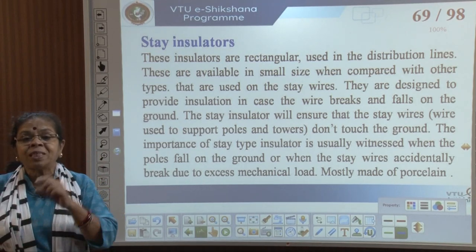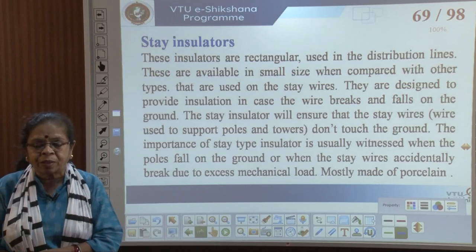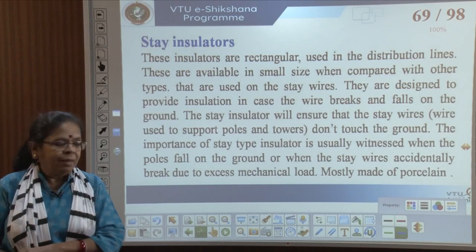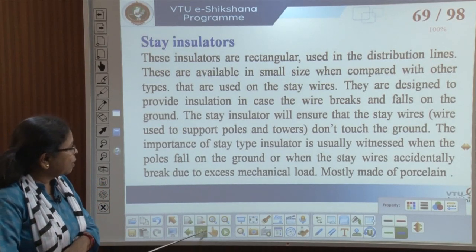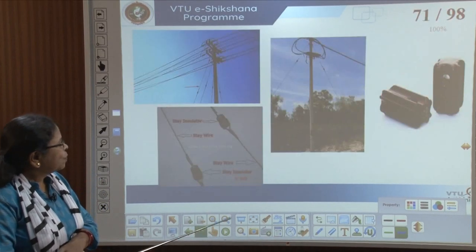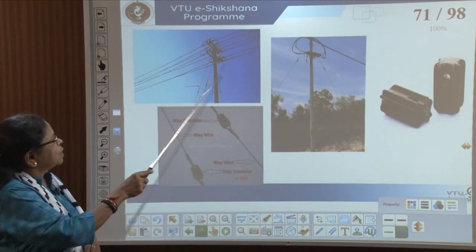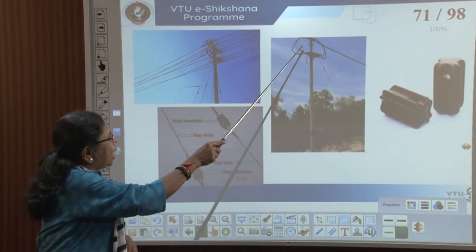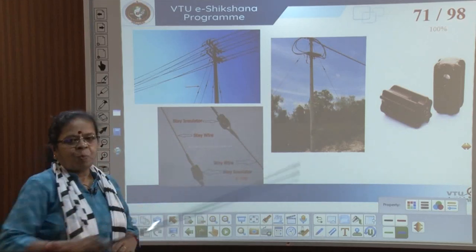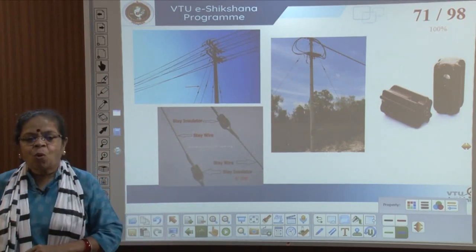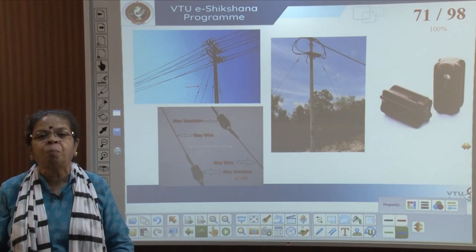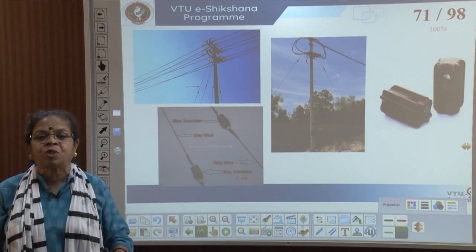Stay wires are two wires attached to a pole — they provide tension to hold the pole in position. You would have seen these on all roadside poles.